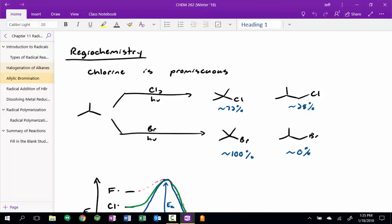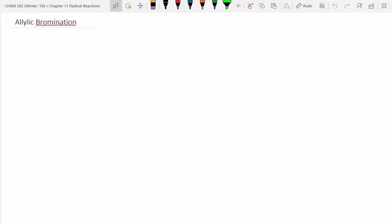All right, today we're going to look at a new type of reaction, but it's very similar. This is called allylic bromination. So let's start off by drawing cyclohexene. That was one of the compounds we've made in lab.